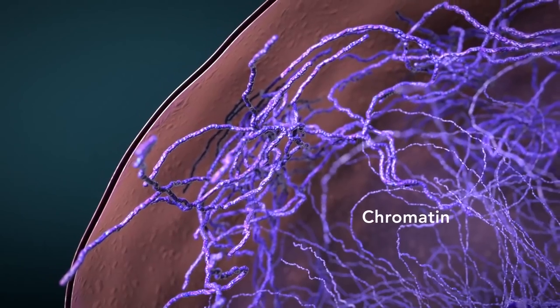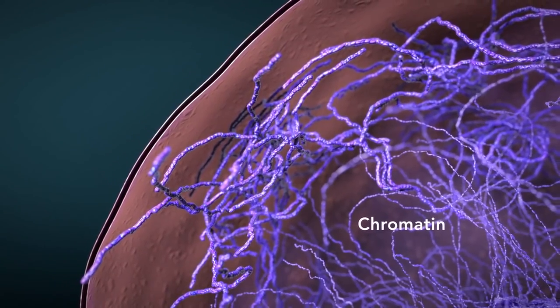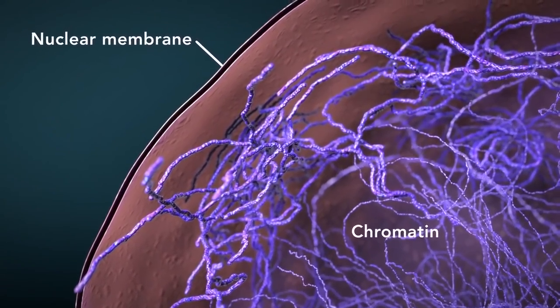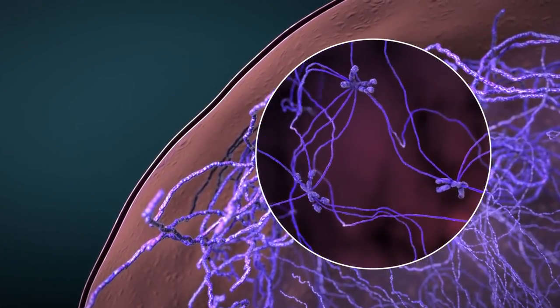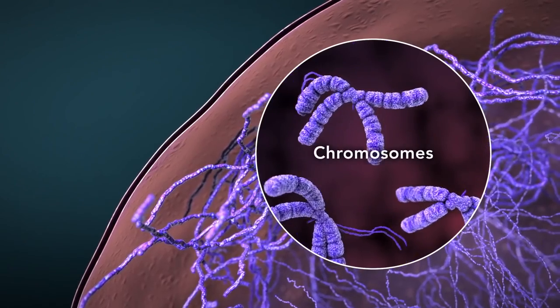Chromatin is the tangled spread out form of DNA found inside the nuclear membrane. When a cell is ready to divide, DNA condenses into structures known as chromosomes.